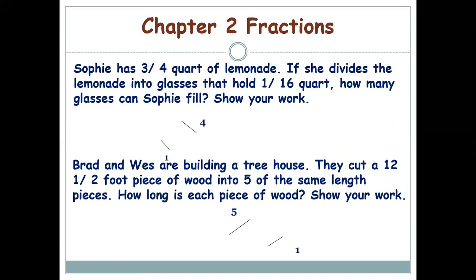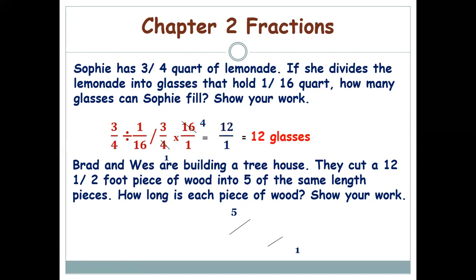Chapter 2 covers fractions — addition, subtraction, multiplication, and division. First question: Sophie has 3/4 quart of lemonade. If she divides it into glasses that hold 1/16 quart each, how many glasses can she fill? Do 3/4 ÷ 1/16. Keep the first fraction the same, change division to multiplication, and take the reciprocal of the second fraction: 3/4 × 16/1. Simplify: 4 ÷ 4 = 1, 16 ÷ 4 = 4. Answer: 3 × 4 = 12 glasses.